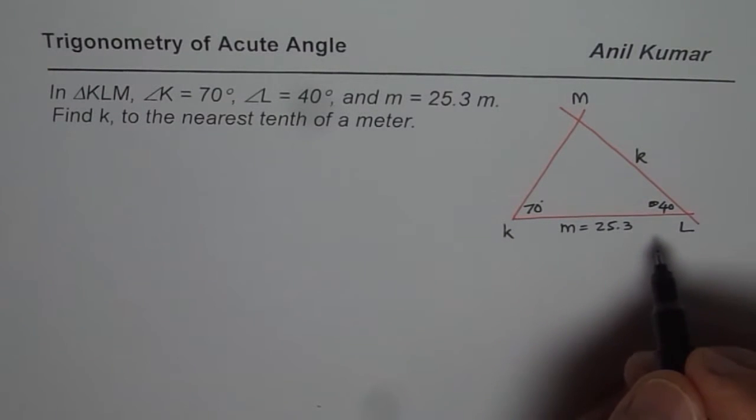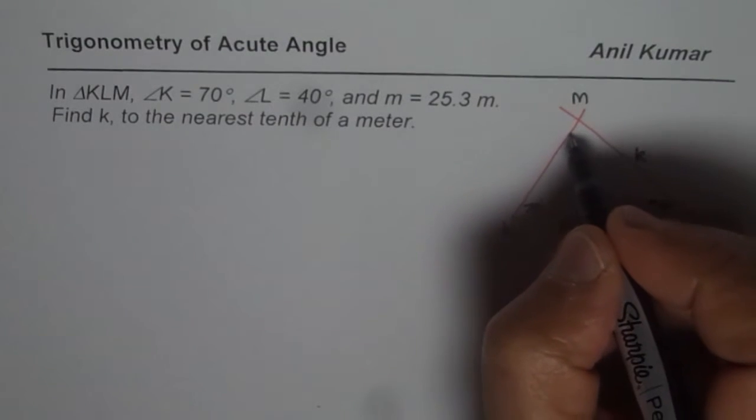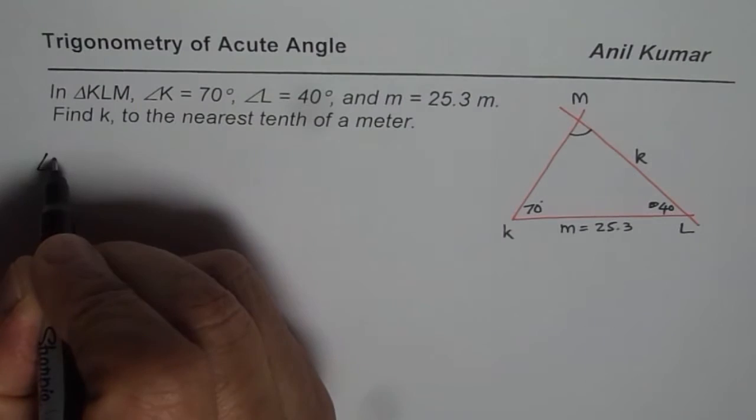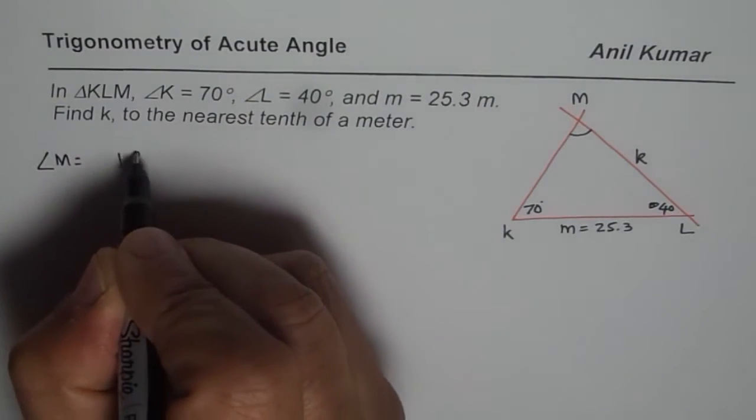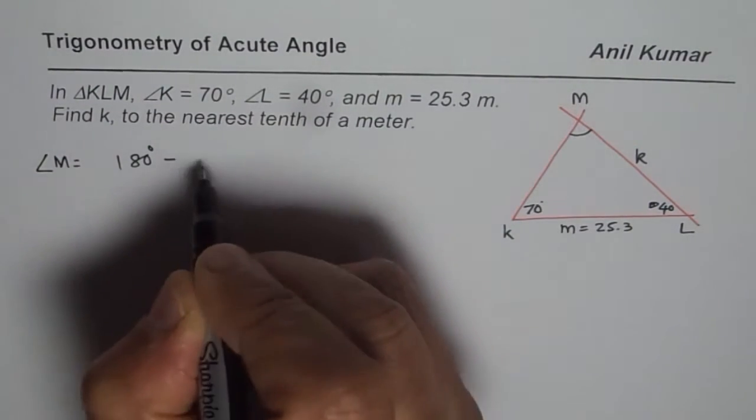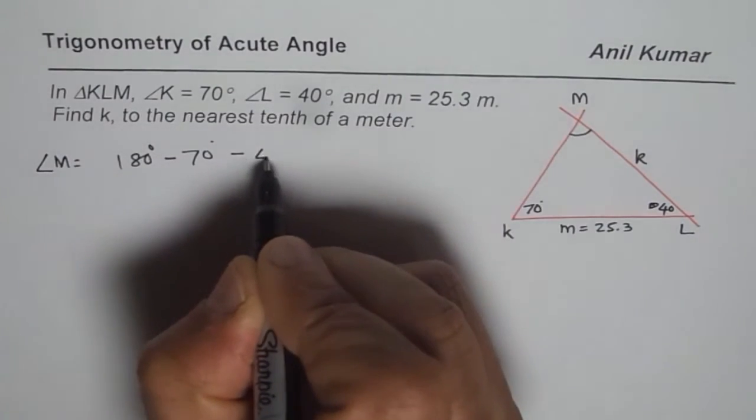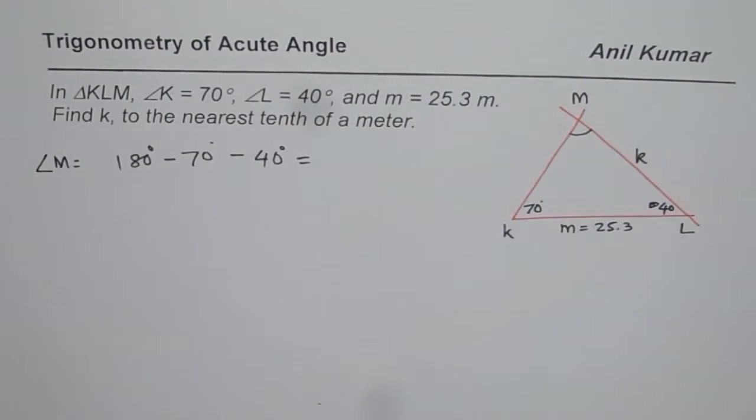Now in this particular triangle, we are given two angles, we can find the third angle, that is angle M. So we say angle at M equals 180 degrees minus 70 degrees minus 40 degrees. So that is the first step.